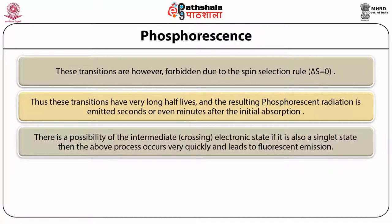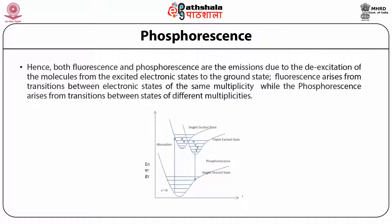There is a possibility of an intermediate crossing electronic state. If it is also a singlet state, then the above process occurs very quickly and leads to fluorescent emission. Hence, both fluorescence and phosphorescence are emissions due to the de-excitation of the molecules from the excited electronic states to the ground state. Fluorescence arises from transitions between electronic states of the same multiplicity, while phosphorescence arises from transitions between states of different multiplicities — the figure shows the singlet excited states and the triplet excited states, with crossing from singlet to triplet and then triplet to the ground state.